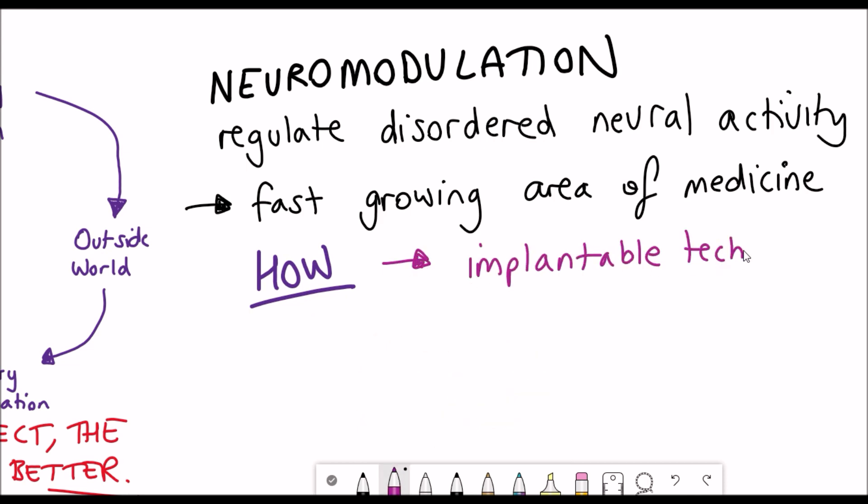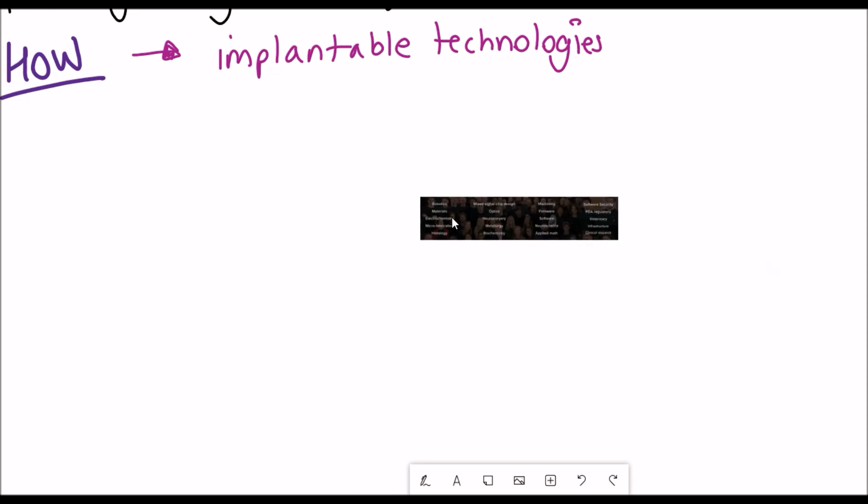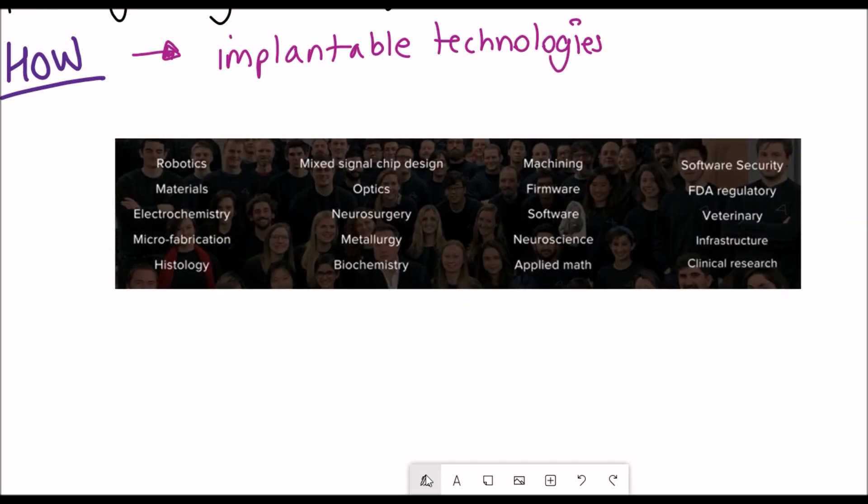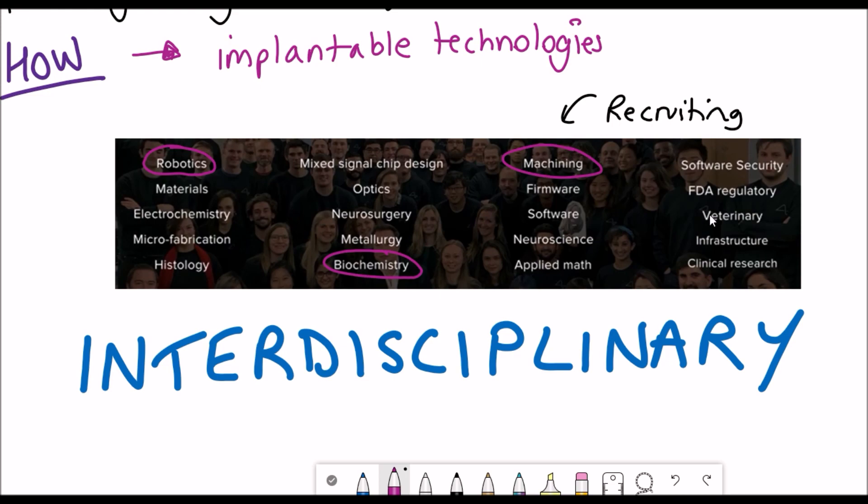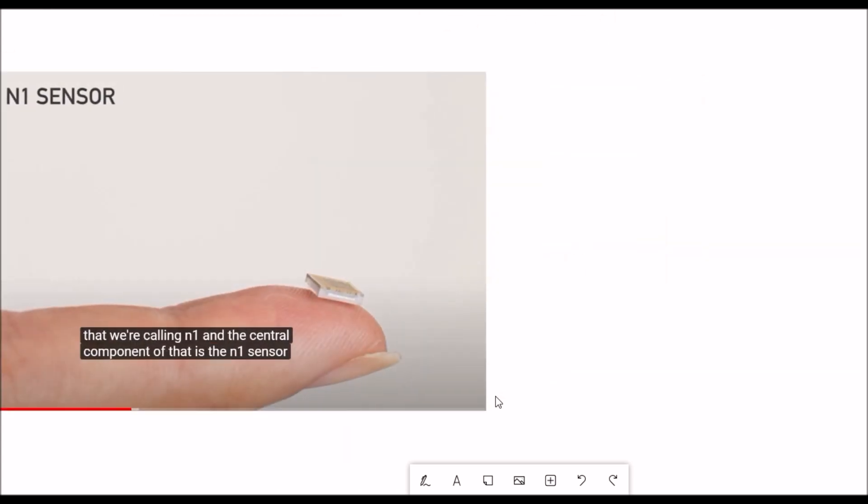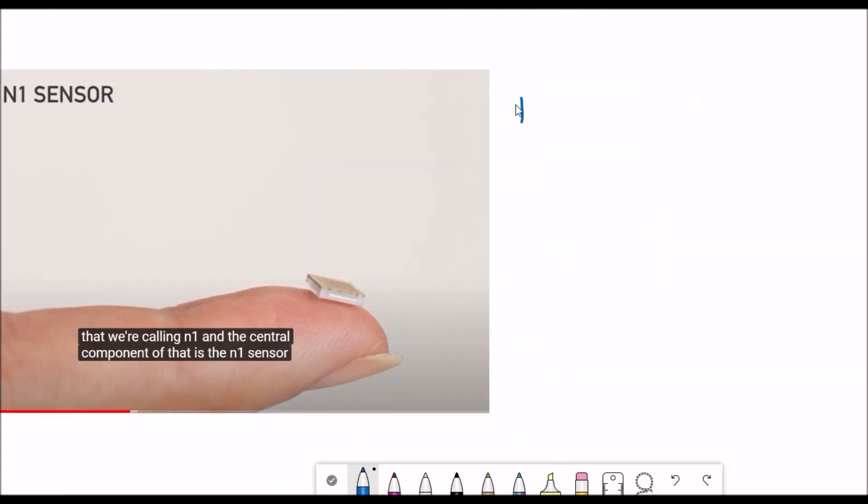There are a lot of emerging technologies that are capable of this but the approach that Neuralink have taken are implantable technologies and this requires the combined knowledge of specialists in a variety of different fields from robotics to materials to biochemistry to FDA regulation to software development.